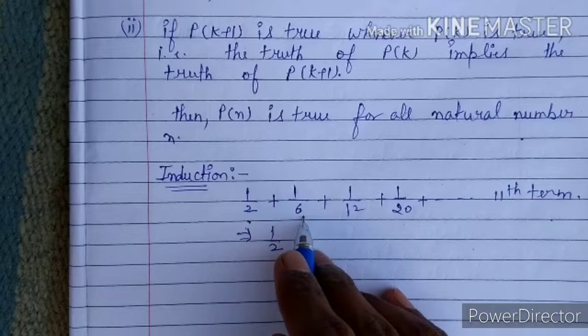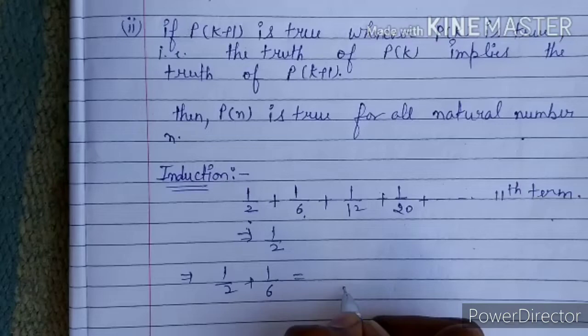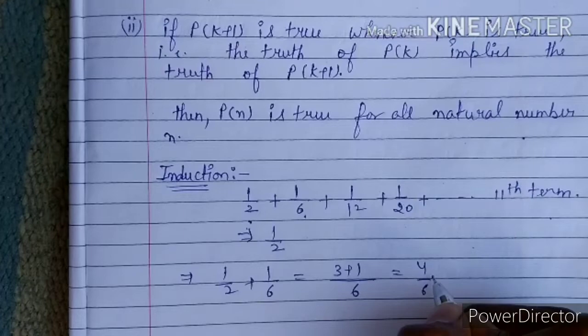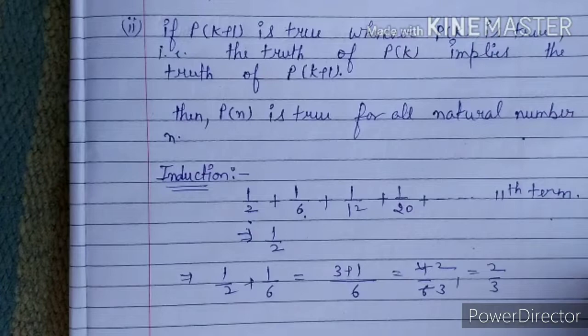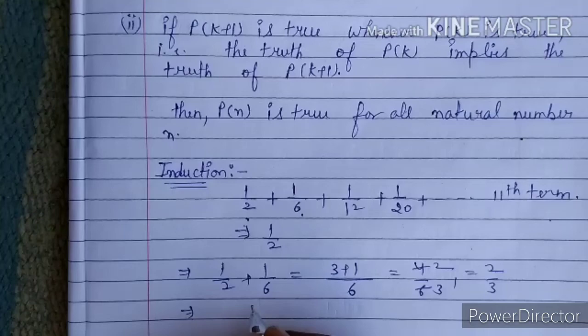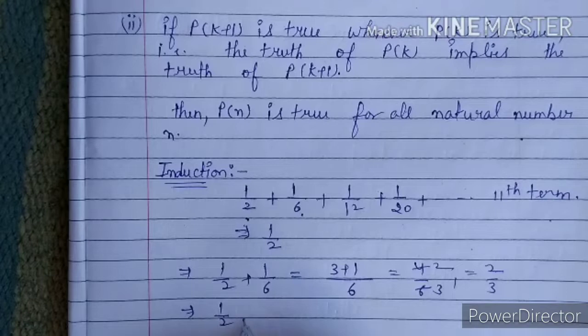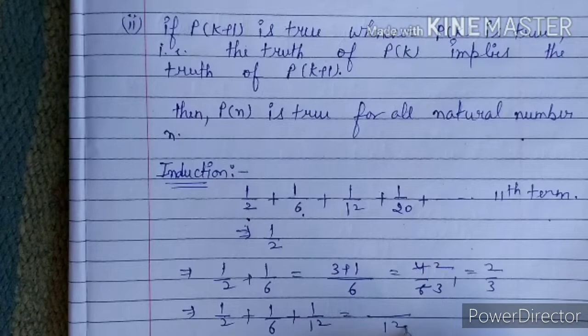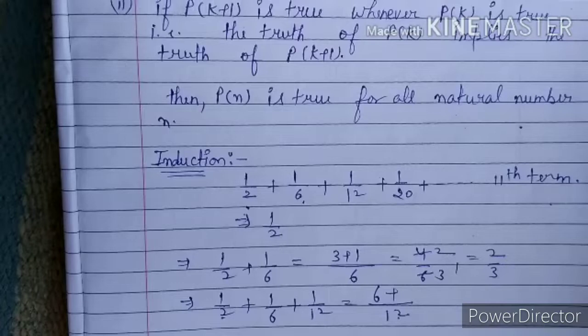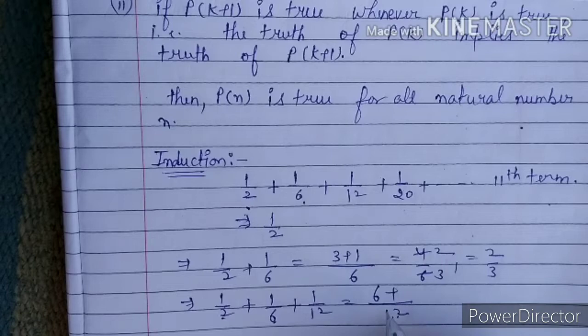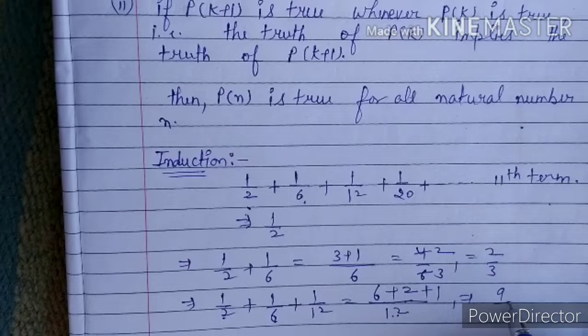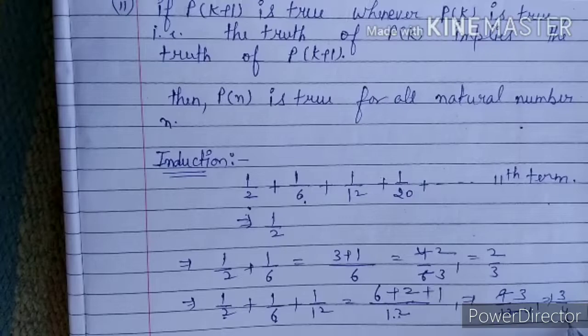The sum of the first two terms: 1/2 plus 1/6 — the LCM is 6, giving 3 plus 1 = 4/6 = 2/3, so the second partial sum is 2/3. The sum of the first three terms: 1/2 plus 1/6 plus 1/12 — the LCM is 12, giving 6 plus 2 plus 1 = 9/12 = 3/4, so the third partial sum is 3/4.